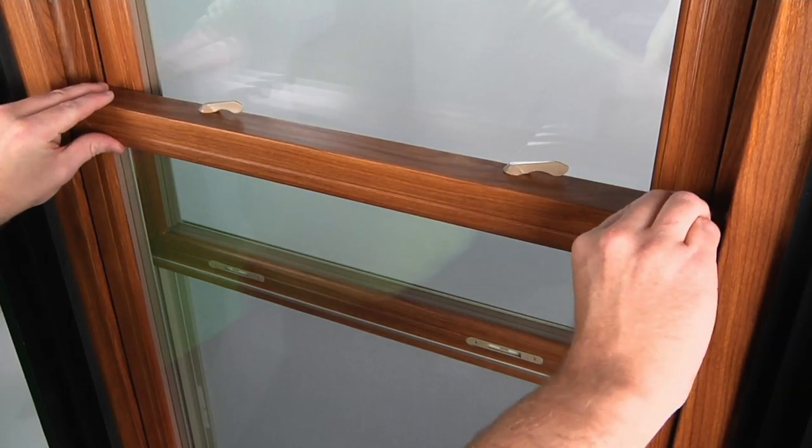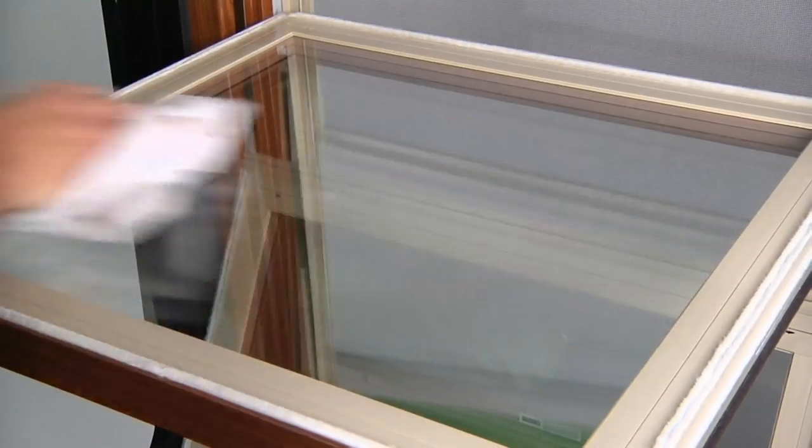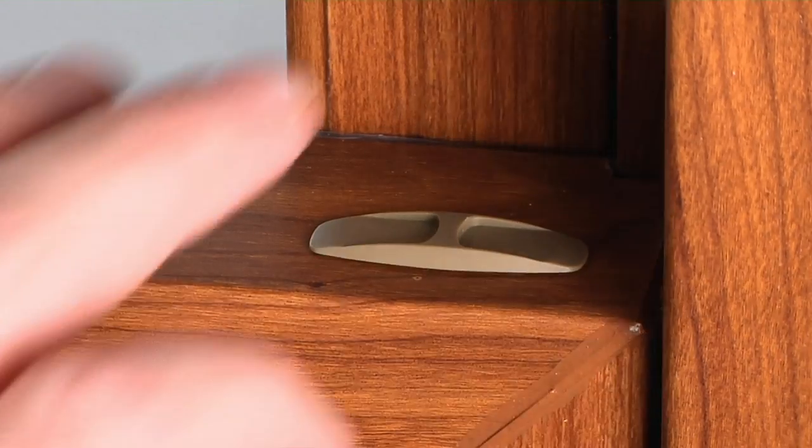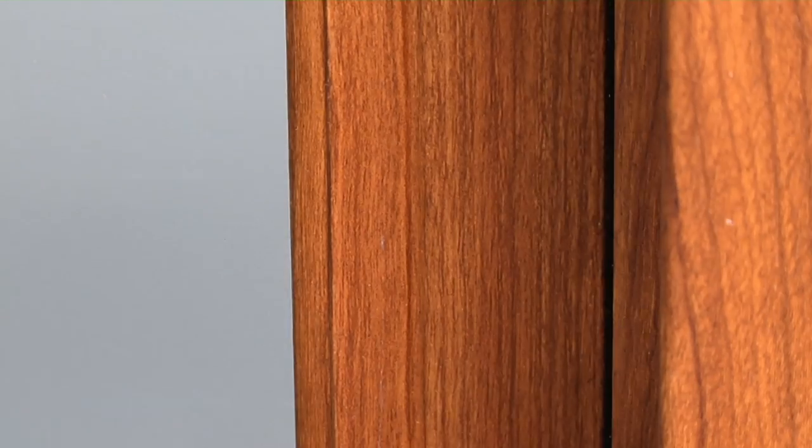Double hung windows allow you to tilt the sashes in for easy, safe, and convenient cleaning. Ultra low-profile recessed cam locks and tilt latches provide a clear and elegant line of sight.